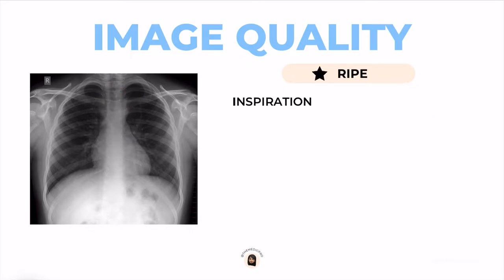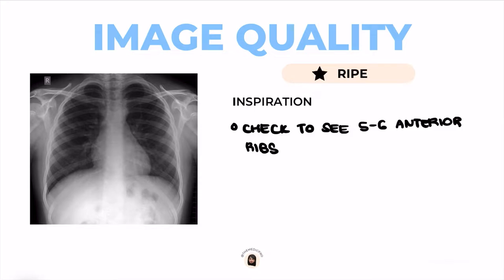I stands for inspiration. When taking an x-ray, the patient is often asked to take a deep breath in and hold, in order for the lungs to be fully expanded. We check this by looking to see whether you can see five to six anterior ribs. Anterior ribs are the ones pointing upwards, so just count them: one, two, three, four, five, and six.